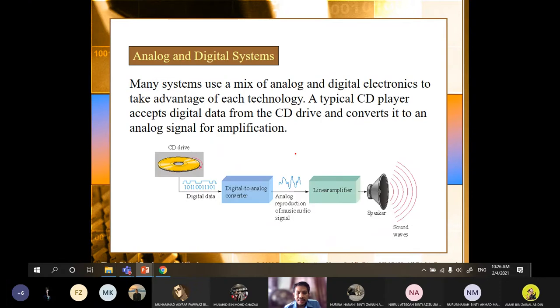So I've explained this a little bit earlier. So we have a system, the difference between analog system and digital system. Analog system is continuous, digital system takes discrete. But there is a system, for example CD player, which is a combination between analog and digital system. So CD player will use digital data from the CD and then convert into analog signal for amplification. So this is the concept of analog and digital system.